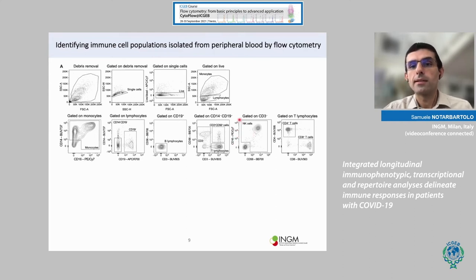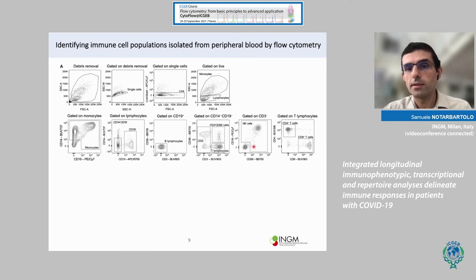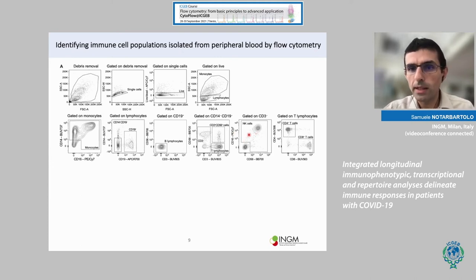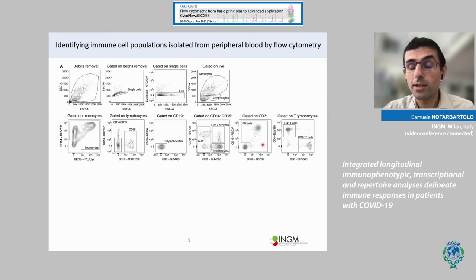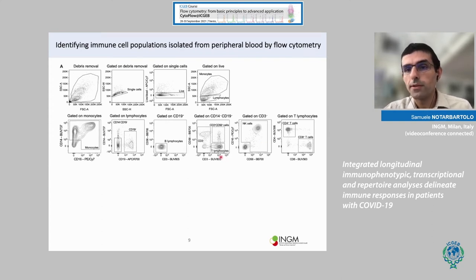From the CD3-negative population, we identified natural killer cells based on staining with CD56 and CD16 — we consider the entire population expressing either or both markers. In principle, you can also distinguish CD56-dim CD16-positive cytotoxic NK cells from CD56-bright cytokine-producing NK cells. Finally, from T lymphocytes we could distinguish CD8 and CD4 T cells.